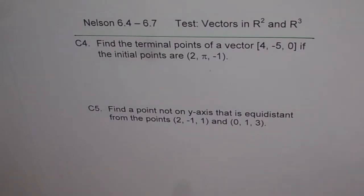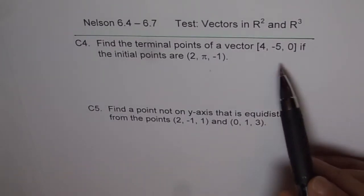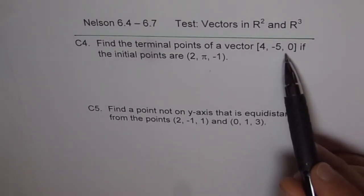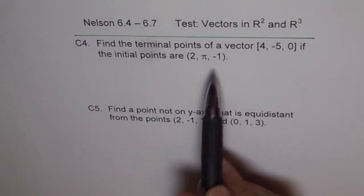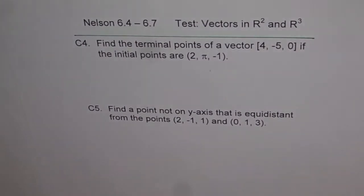C4. Find the terminal points of a vector [4, -5, 0] if the initial points are (2, π, -1). Now, try to answer this question.